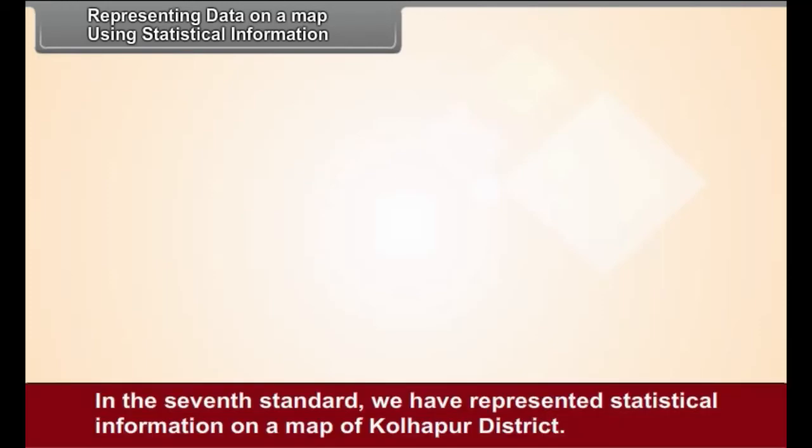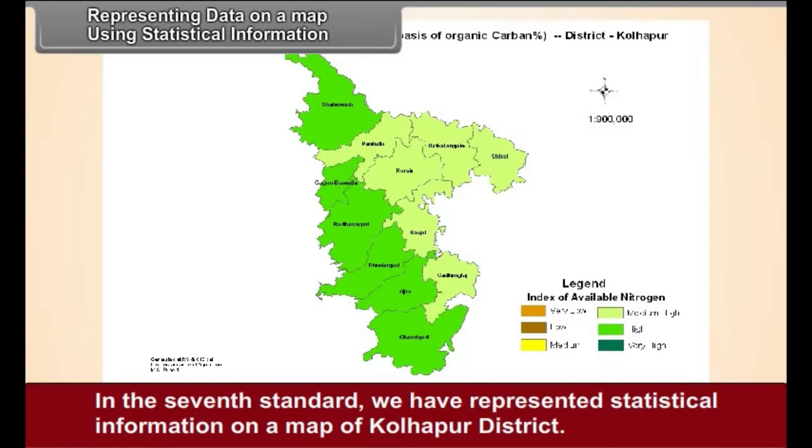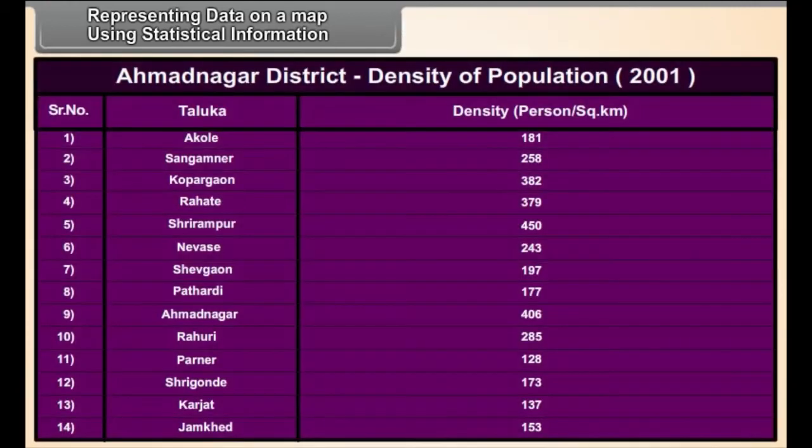5. Representing data on a map using statistical information. In the 7th standard, we had represented statistical information on a map of Kohlapur district. This year, we shall prepare another map. The Taluka-wise density of population, Census 2001, for Ahmadnagar is given in the accompanying table. You have to prepare a choropleth map using this data.